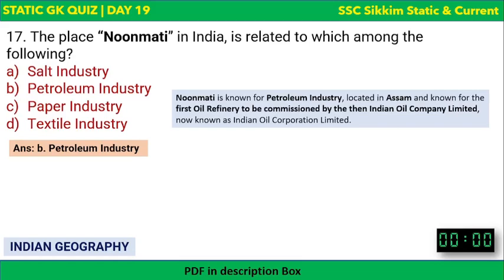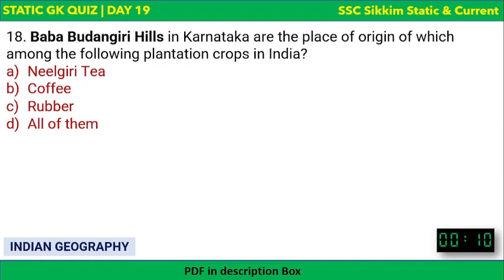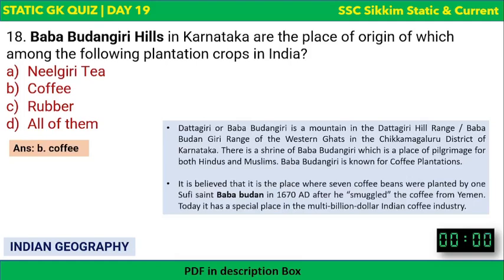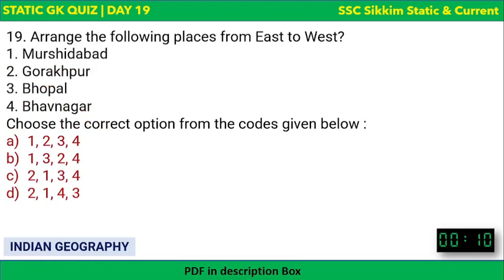Next question: Baba Budangiri Hills in Karnataka is the place of origin of which plantation crop — Nilgiri tea, coffee, rubber, or all of them? The correct answer is coffee. Baba Budangiri Hills in Karnataka is known as the place of origin of coffee in India.